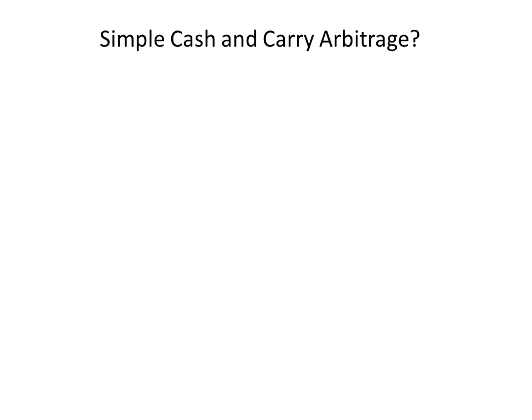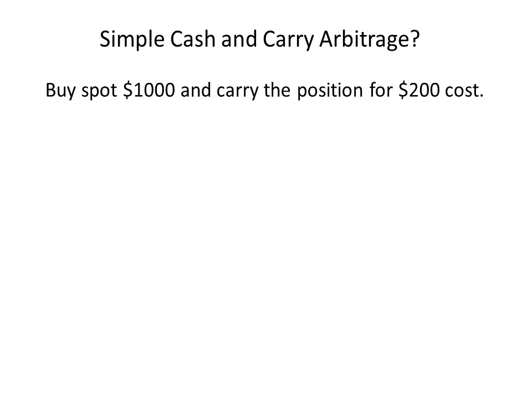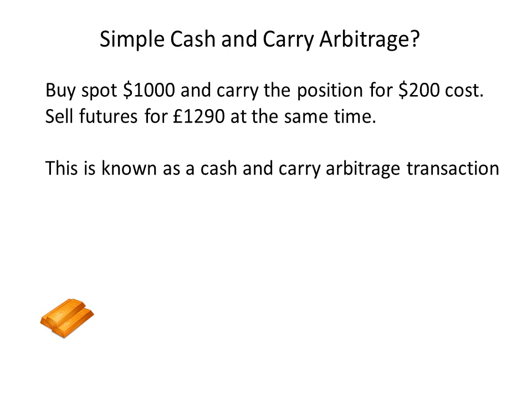What we could do is what's known as a simple cash and carry arbitrage. In this transaction, we purchase the underlying asset — the gold — for $1,000, and we know that if we carry this position to maturity we're going to incur a cost of $200. So we know in advance that in one year's time we will be in possession of gold and the total cost will be $1,200 to us. But before we set off on this one-year journey, we go into the futures market and sell futures for $1,290, thereby locking in a forward selling price of $1,290. This is known as a cash and carry arbitrage.